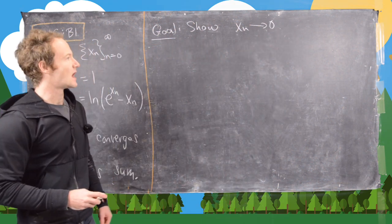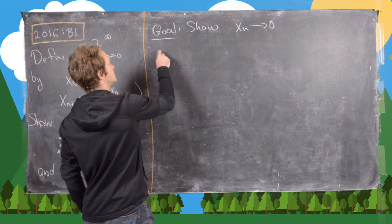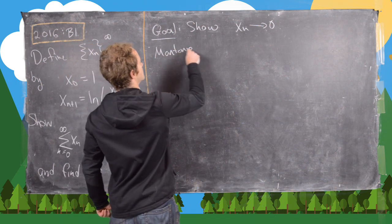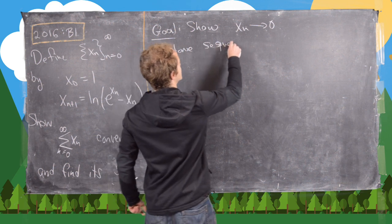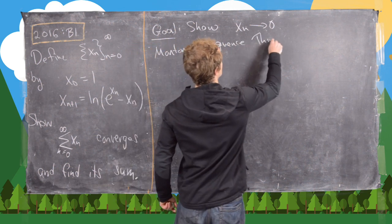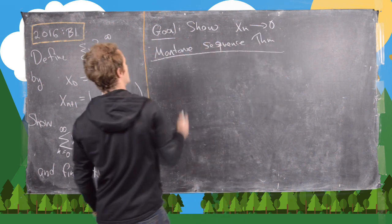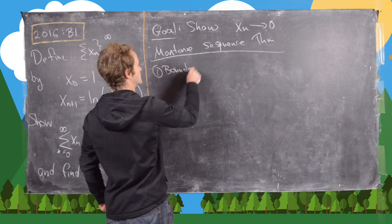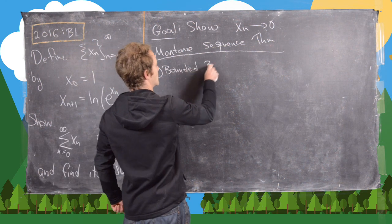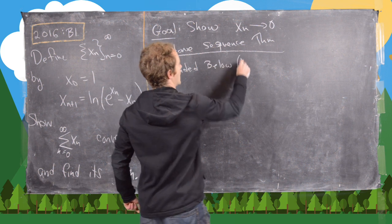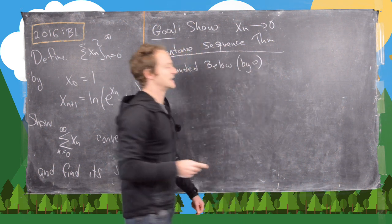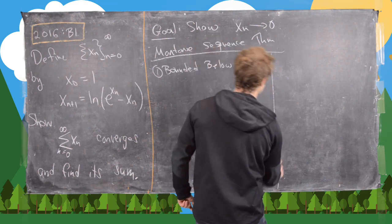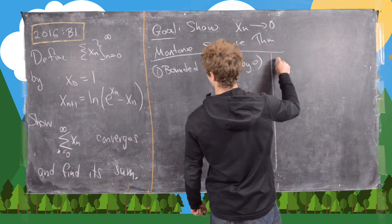We'll do that by the Monotone Sequence Theorem. We'll need to show first that it's bounded below — in this case by 0 — and then we also need to show that it's decreasing.